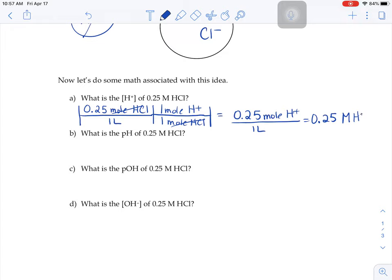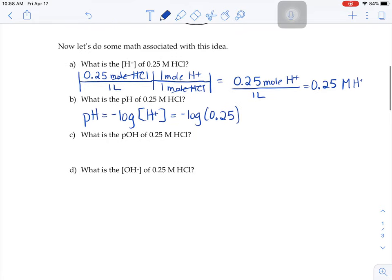Well, if we know what the H+ concentration is, and we want to know what the pH is, now we could use our pH equations. That to do the pH, you do the negative log of the H+. Well, we just found the H+ in part A, negative log of 0.25. If you type that in your calculator, you should get a pH of about 0.6.